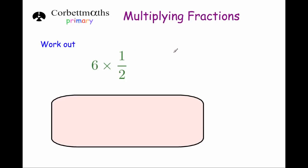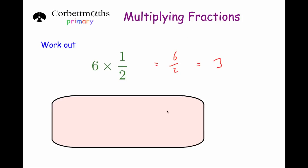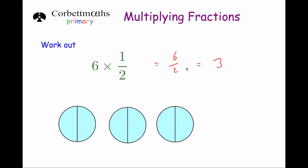Just before we look at mixed numbers, I want to point out a special case when multiplying fractions by whole numbers. If we had 6 times 1 half, that gives 6 halves — but 6 halves is equal to 3. So be aware that sometimes multiplying a fraction by a whole number gives a whole number answer, because the fraction bar means divided by, and 6 divided by 2 is 3.